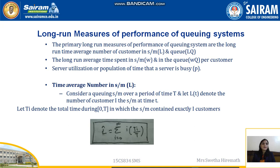To clarify: L is the number of customers in the system, while Lq is the number of customers in the waiting line. Similarly, W is the long-run average time a customer spends in the system, and Wq is the time spent in the queue. Server utilization p is the proportion of time a server is busy. For time-average number in system L, consider a queuing system over a period of time T. Let L(t) denote the number of customers in the system at time t, and let Ti denote the total time during [0, T] in which the system contains exactly i customers.